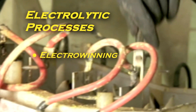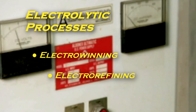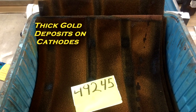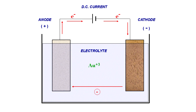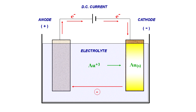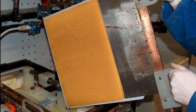Electrowinning and electrorefining are both electrolytic processes used to extract metals from solution. Electrowinning is the electrodeposition process, which can be thought of as large-scale electroplating. In electrowinning, electrical current is passed from an inert anode through leach solutions from mining operations, for example. The metal is extracted as it gains electrons and is deposited onto the cathode. Electroplating deposits thin layers of metal from solution electrically, whereas electrowinning deposits much thicker layers which can be removed from the cathode.